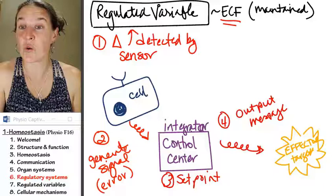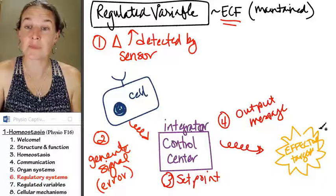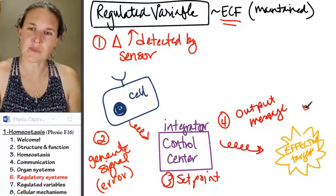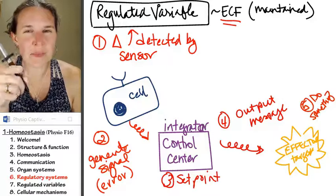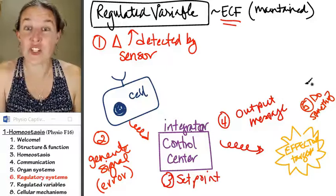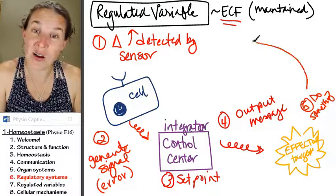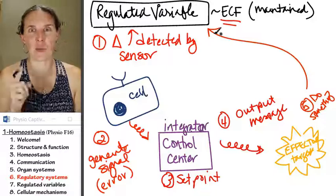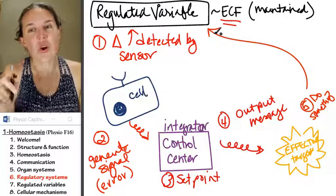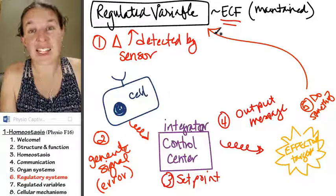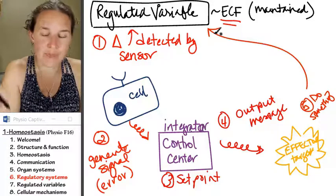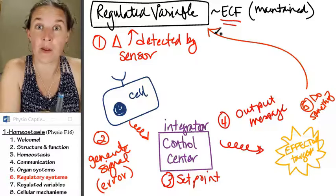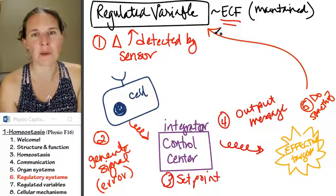And the target is going to do something. And the do something is going to somehow impact the regulated variable. So the effect, the action that happens has to inform the variable that we're talking about in the first place.